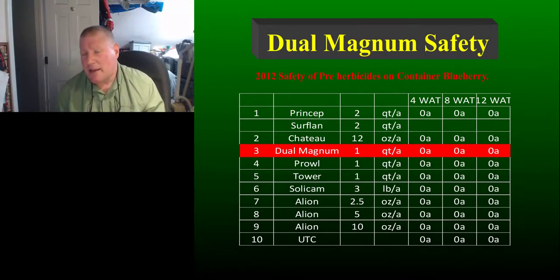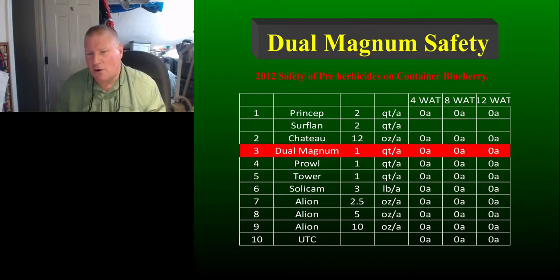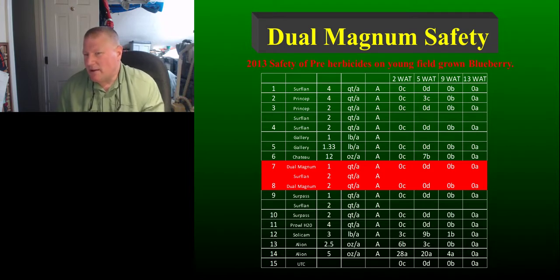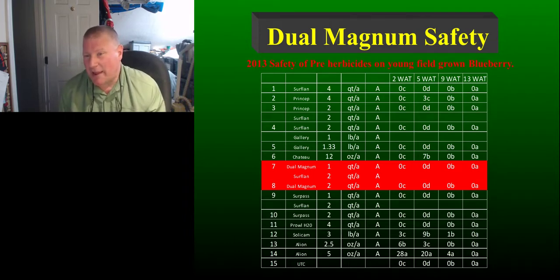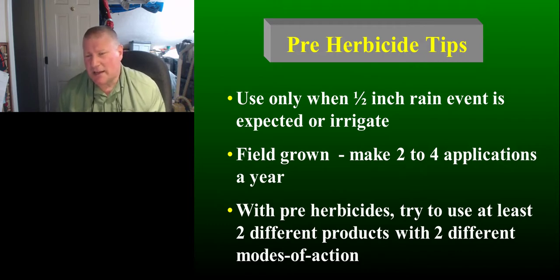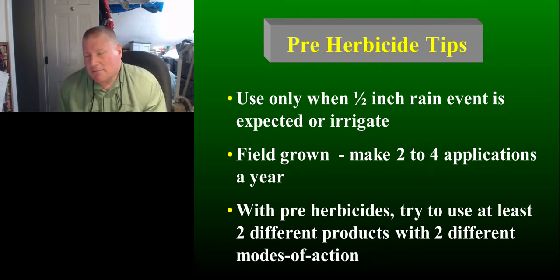I would run Dual Magnum as high as 21 ounces with no problem, mixed with Simazine at two quarts and Trellis at a pound — that's a pound dry or about a quart liquid per acre. It's still under a Section 24c state by state, which was supposed to change about three years ago and still hasn't. I've worked with Dual Magnum quite a bit in blueberries, and in studies at four, eight, and twelve weeks I've seen very little damage on young plants. I was mixing Dual Magnum with Surflam and not seeing any damage issues, which is really encouraging.